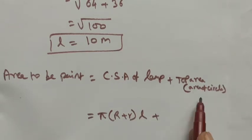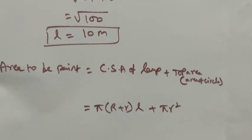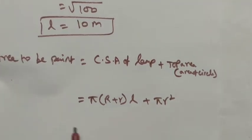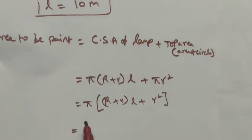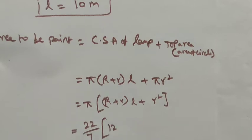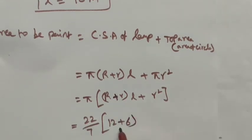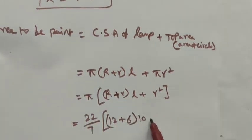The top area, which is the area of the circle, is πr². Taking π as common, the total area = π[(R + r) × l + r²]. Now substituting: π = 22/7, R = 12, r = 6, l = 10, so we have (22/7) × [(12 + 6) × 10 + 6²].